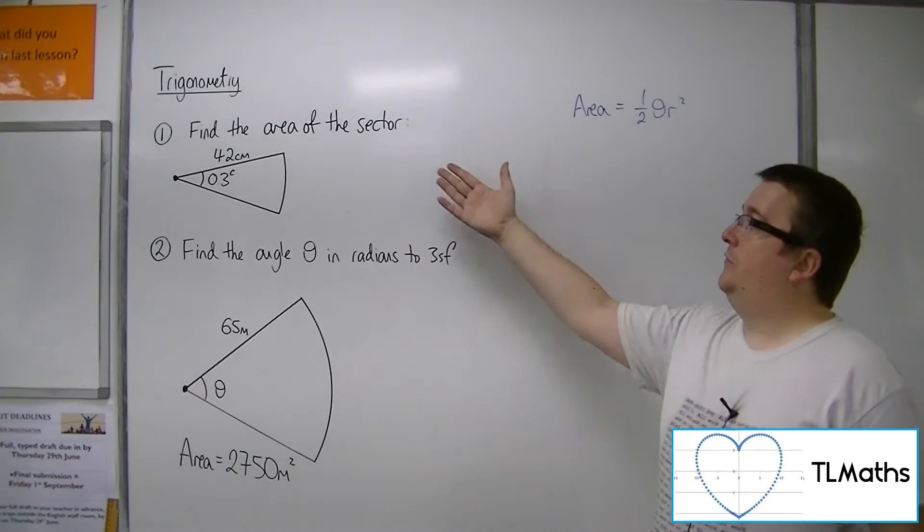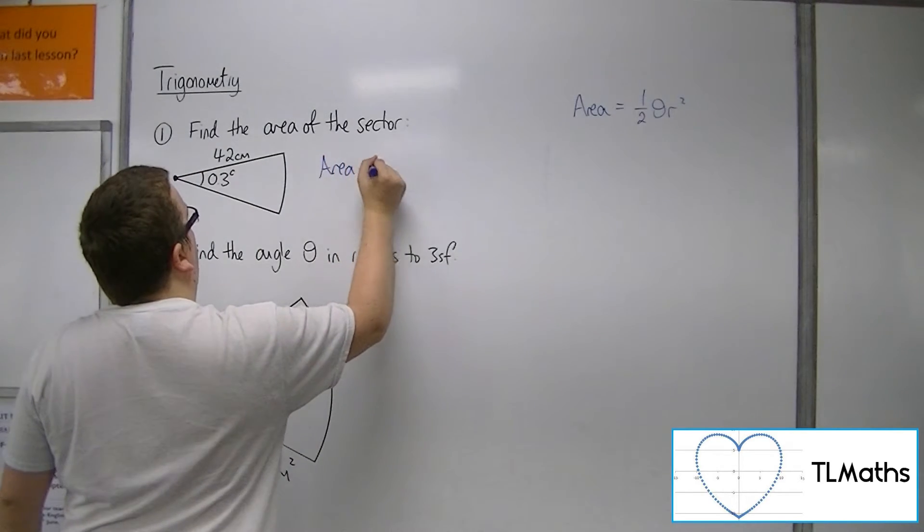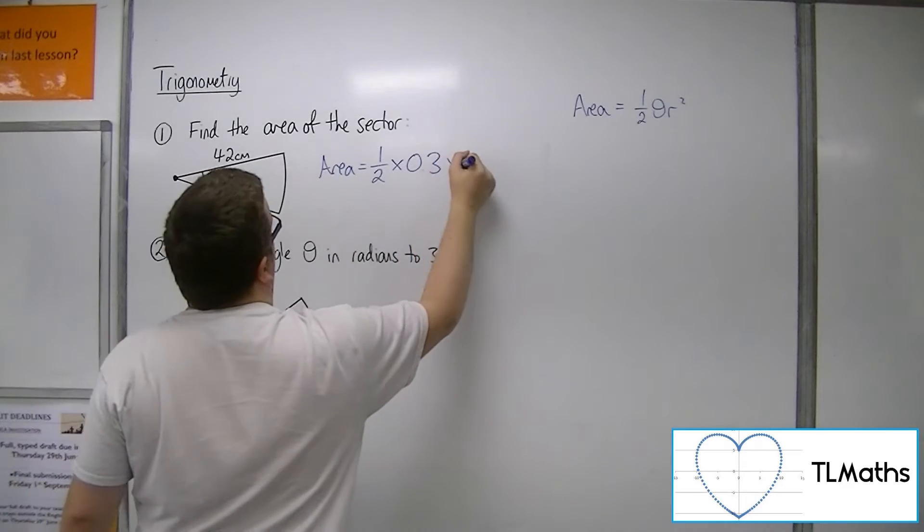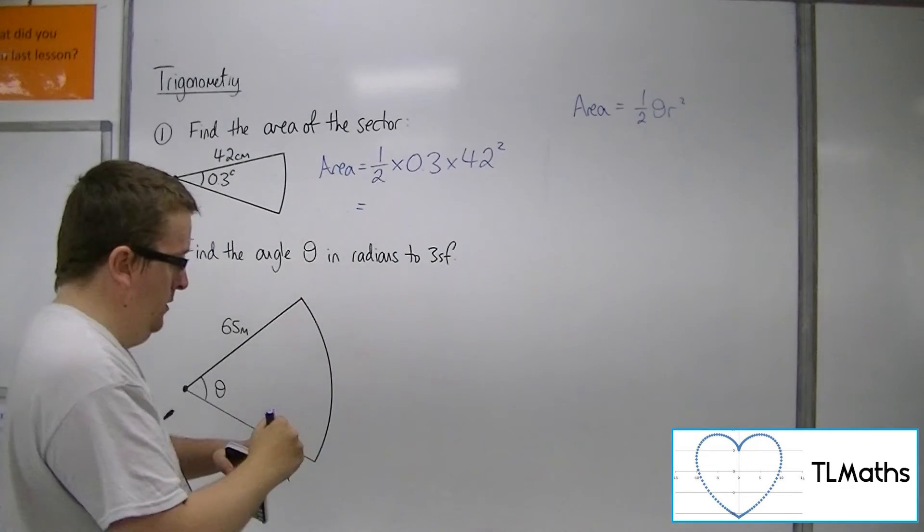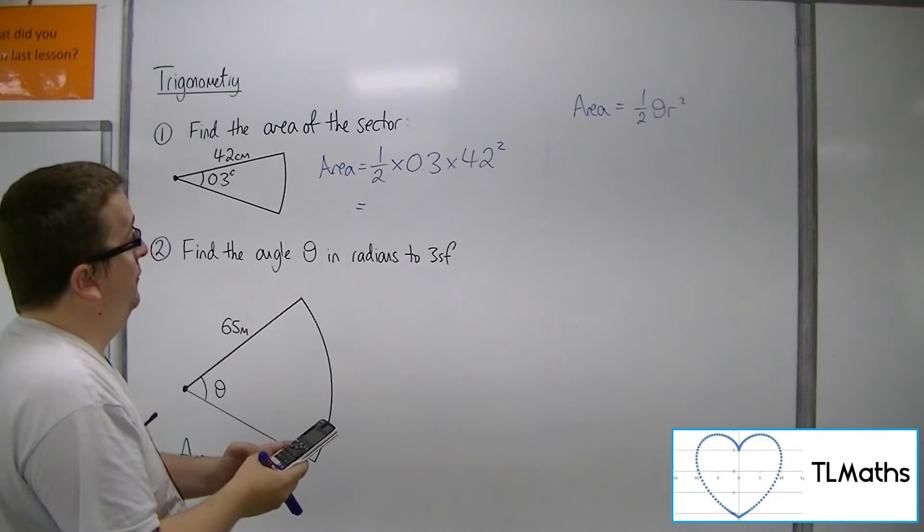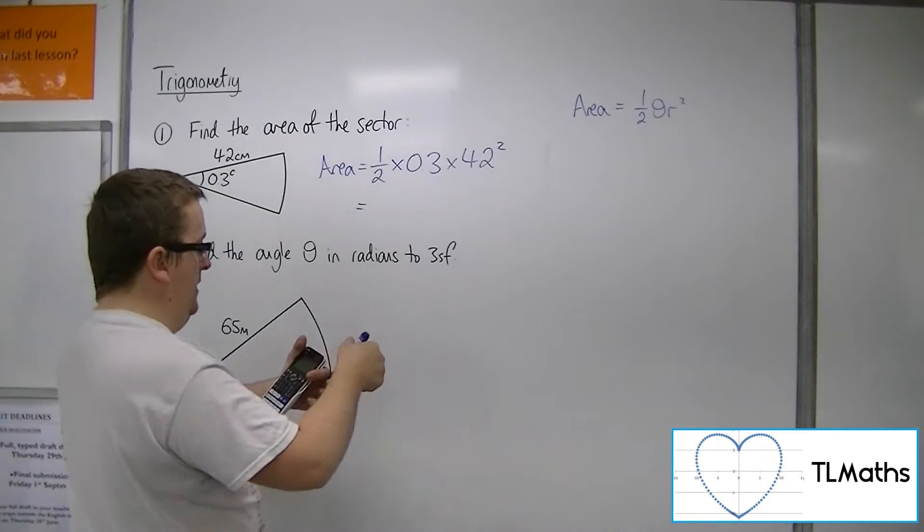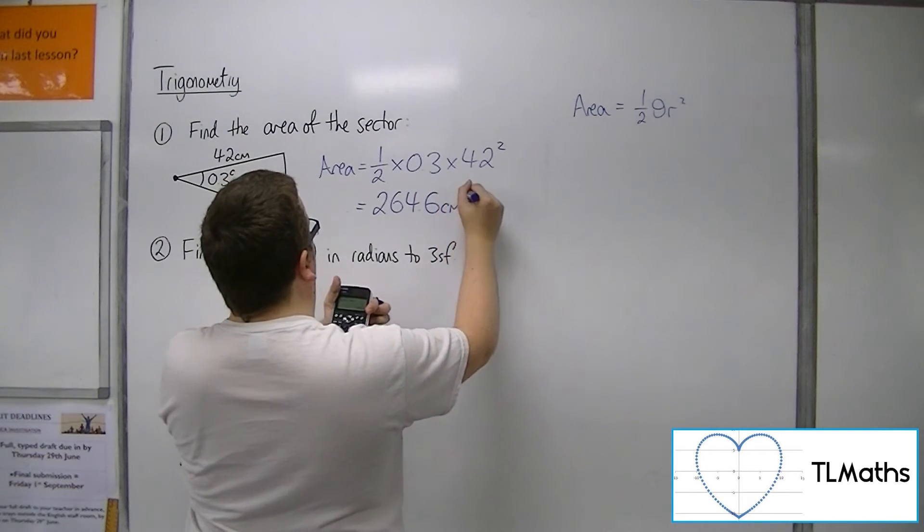So if I need to find the area of this sector, then the area is 1 half times theta 0.3 times r 42 squared. So 1 half times 0.3 times 42 squared is 264.6 centimeters squared.